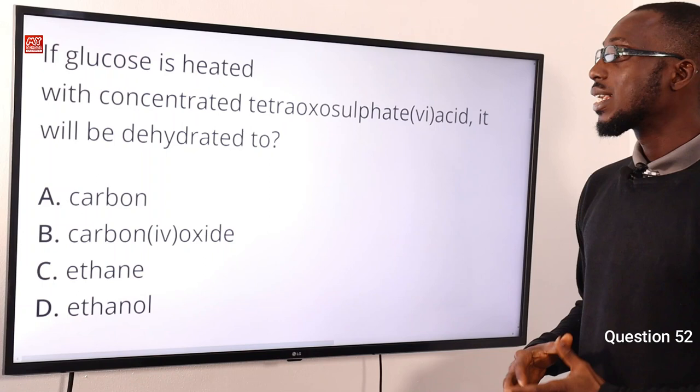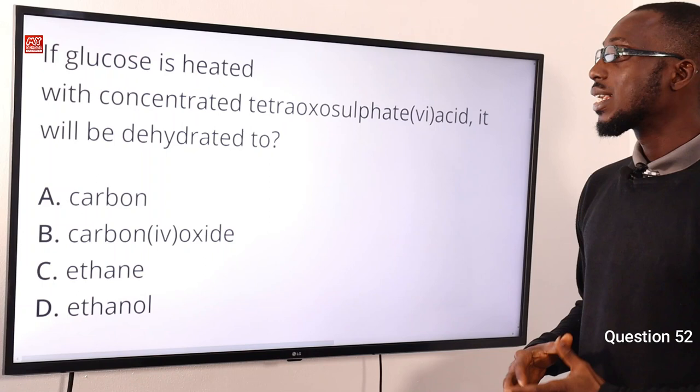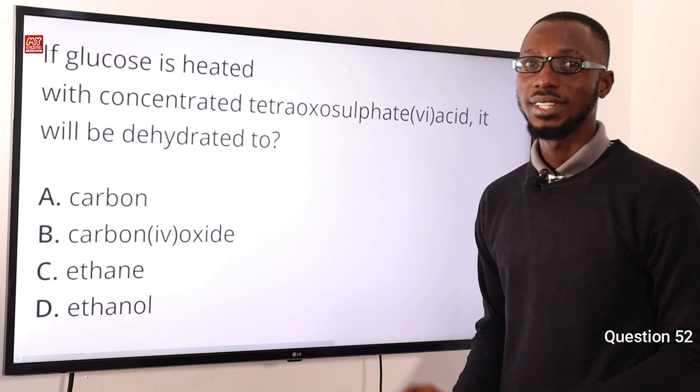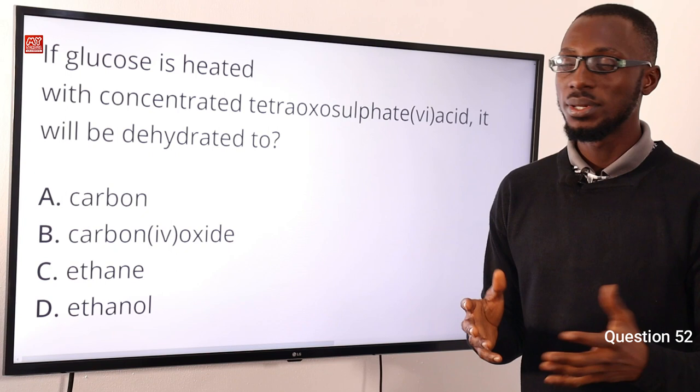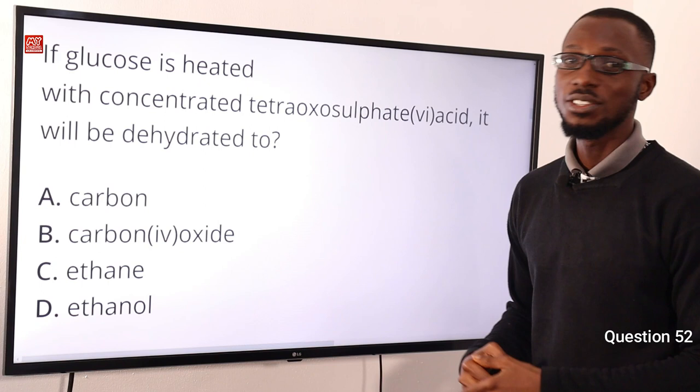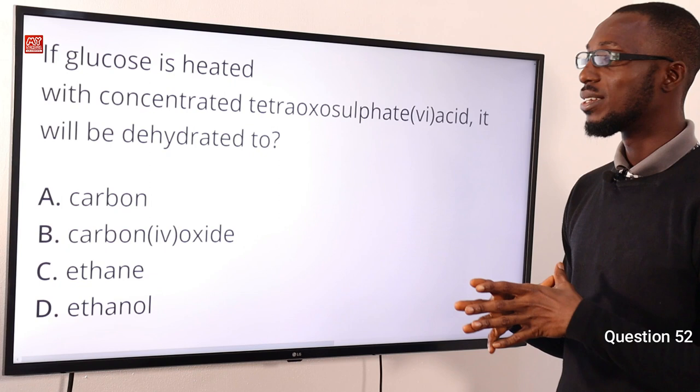Question 52: If glucose is heated with concentrated sulfuric acid (H₂SO₄), it will be dehydrated to carbon residue — sugar charcoal. This is the purest form of amorphous carbon. Treating glucose with concentrated H₂SO₄ yields carbon. The correct option is option A for carbon.